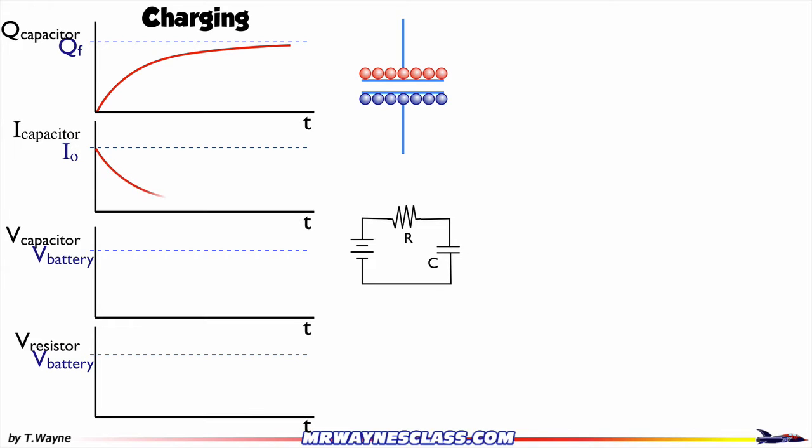Because the rate slows down, we can see what happens to the current as well. At first all the people can flow into the room, but as the room gets full, it's harder and harder to stick more people in there. So the current, which is the rate of change of the amount of charge put on there, also slows down.